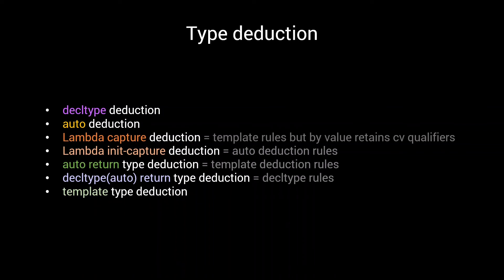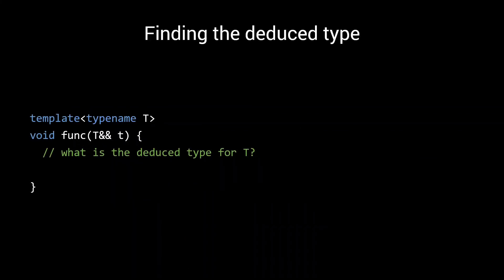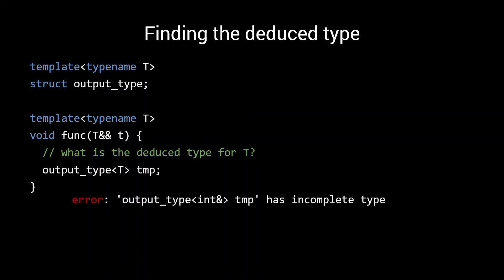A crude, yet effective option is to simply trigger a compiler error which contains the type you are interested in. You can simply do this by declaring a template, but not defining it. If we now try to create an instance of outputType with T as a template parameter, the compiler will give an error that looks something like this. Error. OutputType, and then the type that was deduced for the template parameter, has incomplete type. So with an error like this, you know that T was deduced to be an lvalue reference to int. A simple and effective method to quickly find out what the deduced type is.